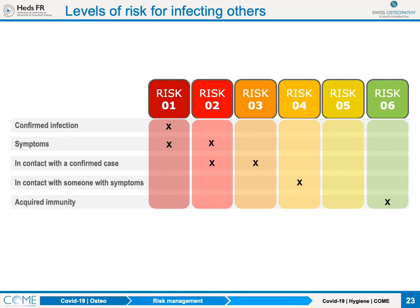Risk level four is someone without symptoms but who has been in contact with someone showing symptoms — though many other viral diseases cause similar symptoms, making it attenuated. Risk level five is where most of the population falls: people who have no symptoms and no one close to them with symptoms or a confirmed case. Risk level six is people who have acquired immunity — very unlikely to be infected because the immune system usually repels the virus before it develops symptoms or before the viral load is high enough to contaminate others.